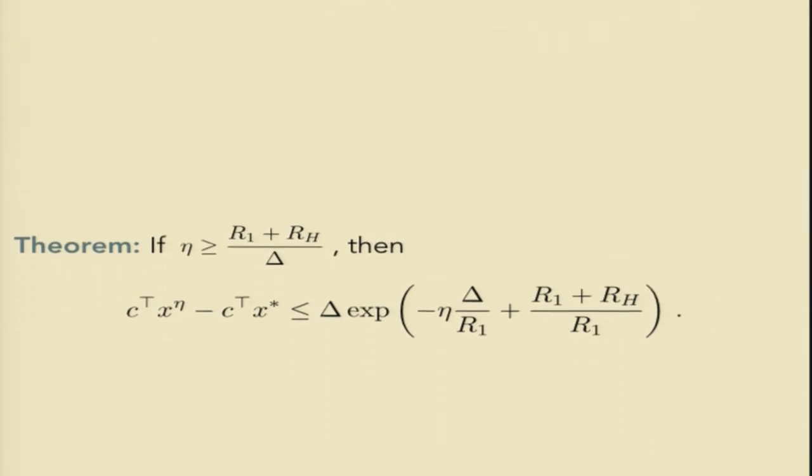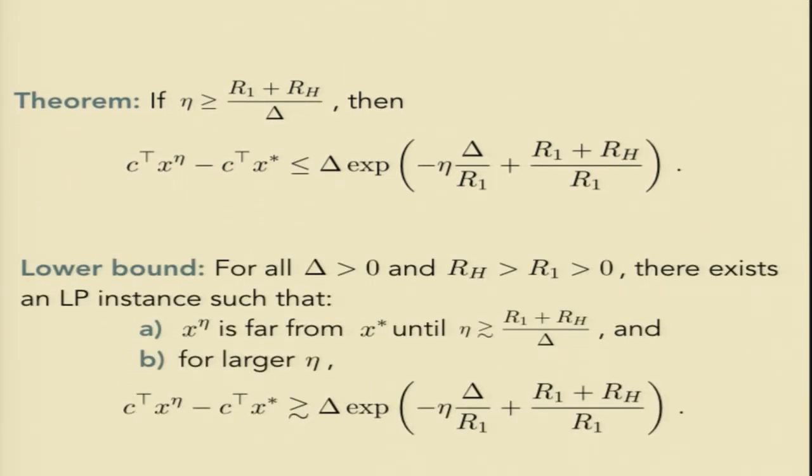But there's a lower bound, too. If you give me a delta and R1 and RH in my hand, then I can come up with a linear programming instance with exactly those parameters so that the two phenomena you see in the upper bound hold in the lower bound, too. The first is that the exponential convergence starts to kick in exactly at this place, and that when you're bounded away from that, you are really not very close to the optimum at all. And moreover, after that point, you degrade at exactly this exponential rate up to a constant factor, which is small.